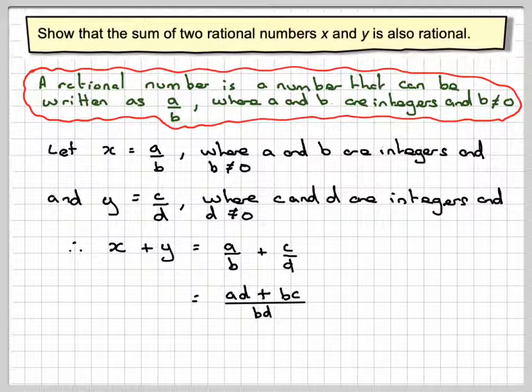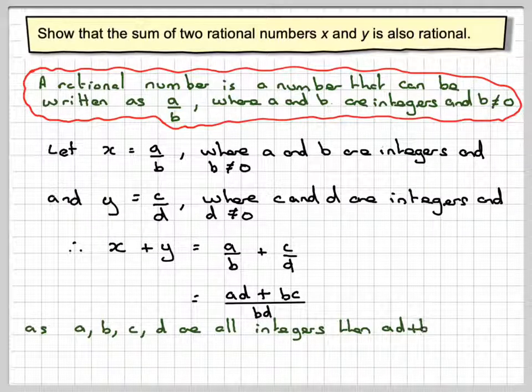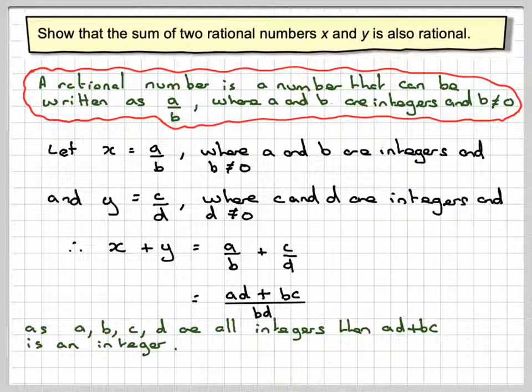We need to say something about that. Since a, b, c, and d are all integers, then ad plus bc is an integer.